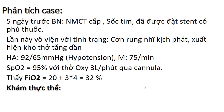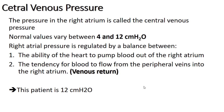Phân tích ca lâm sàng: 5 ngày trước bệnh nhân đã có nhồi máu cơ tim cấp và sốc tim, đã được đặt stent có phủ thuốc. Lần này vào bệnh viện xuất hiện cơn rung nhĩ kịch phát sau nhồi máu cơ tim cấp và sốc tim, kèm theo khó thở tăng dần. Huyết áp là 92/65, mạch 75, SpO2 95% với oxy 3 lít/phút qua canula. Áp lực tĩnh mạch trung tâm bình thường là 4–12 cm nước.